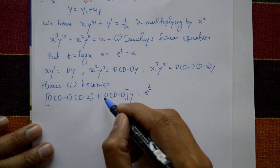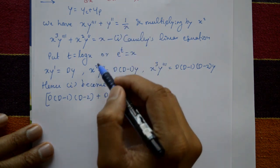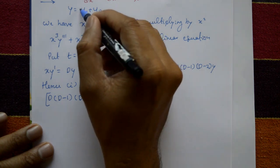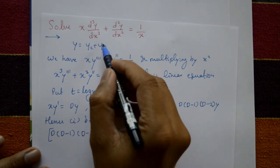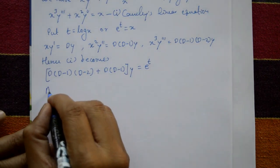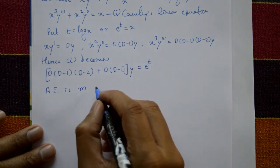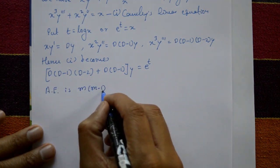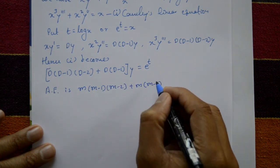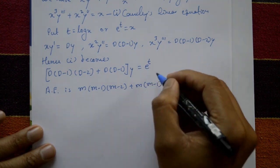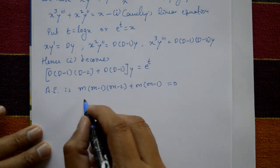Now find the complementary function and particular integral using standard Cauchy-Euler steps. For the complementary function, write the auxiliary equation: m(m−1)(m−2) + m(m−1) = 0. The right-hand side is zero for the auxiliary equation.